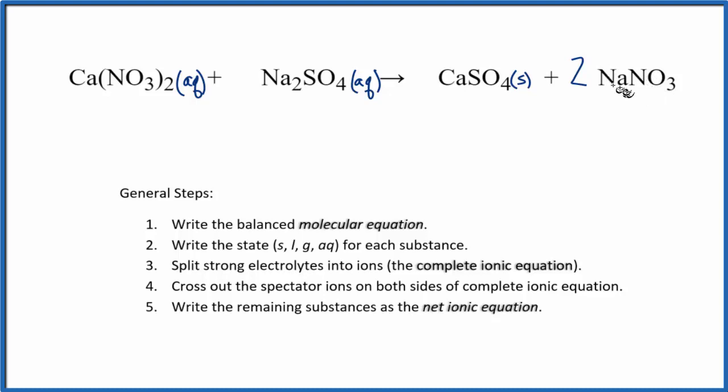We said nitrates and sodium compounds, both very soluble, dissolved in water (aq). So we have our states. Now we're going to split the strong electrolytes apart into their ions. So those are the things that have aqueous after them. We can split those apart.